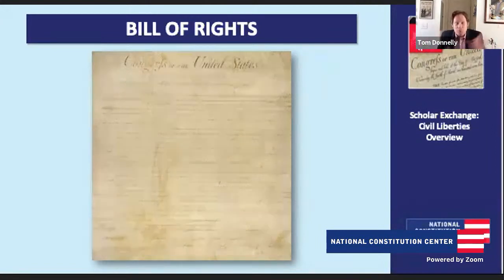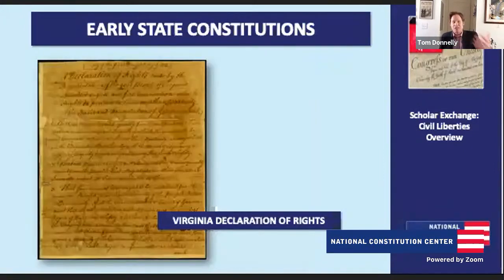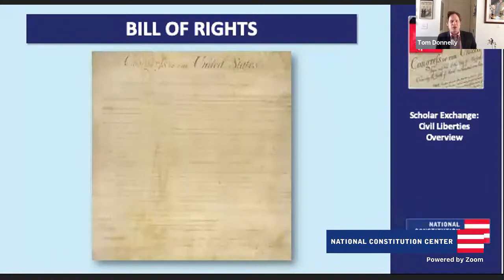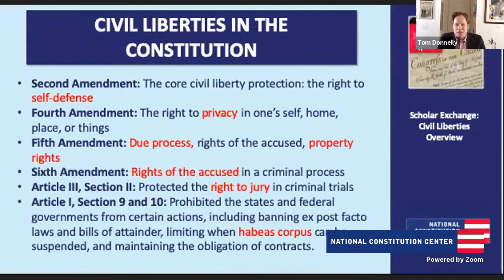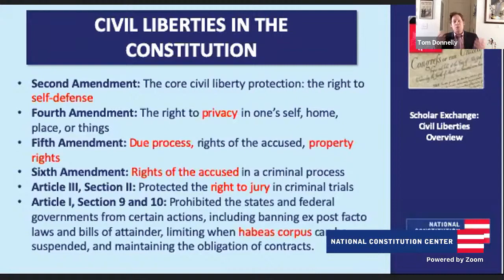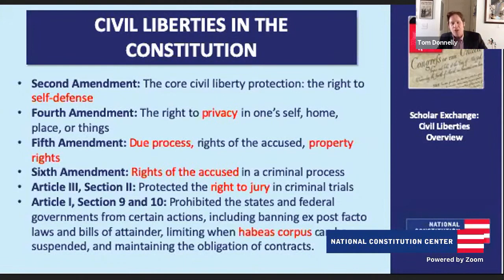Tom Donnelly: State constitutions have those protections — our national constitution has to have it too. So let's go to the Bill of Rights and see where these civil liberties are. This is an initial attempt by the founding generation, with James Madison in the first Congress, really shepherding the first drafts of the Bill of Rights through Congress — trying to say what is it that we find most fundamental. We see individual rights here. There's the Second Amendment right to keep and bear arms. As it's been interpreted over time by scholars and ultimately by the Supreme Court, a core part of this right is the right to self-defense — especially under cases like Heller and McDonald — a right of self-defense in your home.